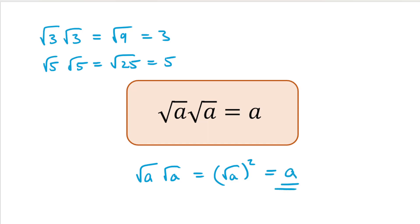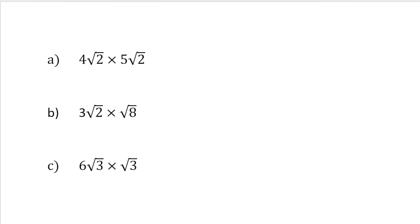So let's try to see this applied in a few other examples. 4 root 2 times 5 root 2. What we'll do is multiply the 4 and the 5, so that gives us 20. And then we multiply the root 2 by root 2, and that will give us 2. So we end up with 20 times by 2, which is 40.